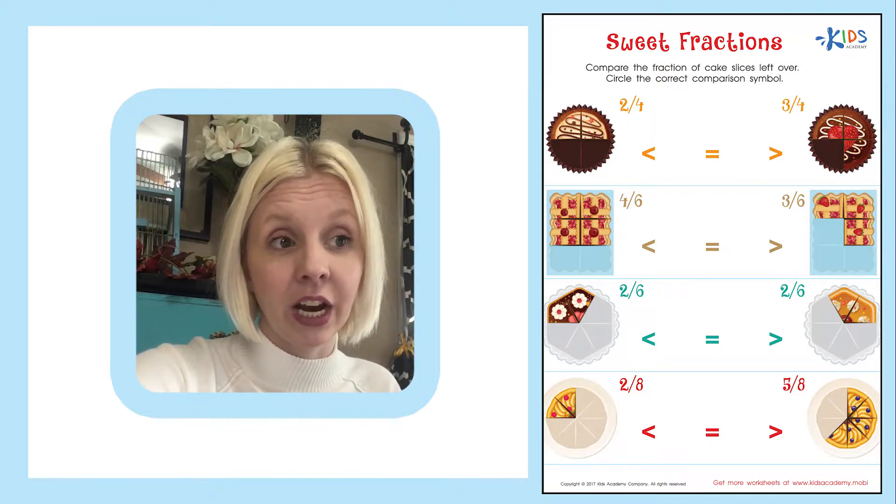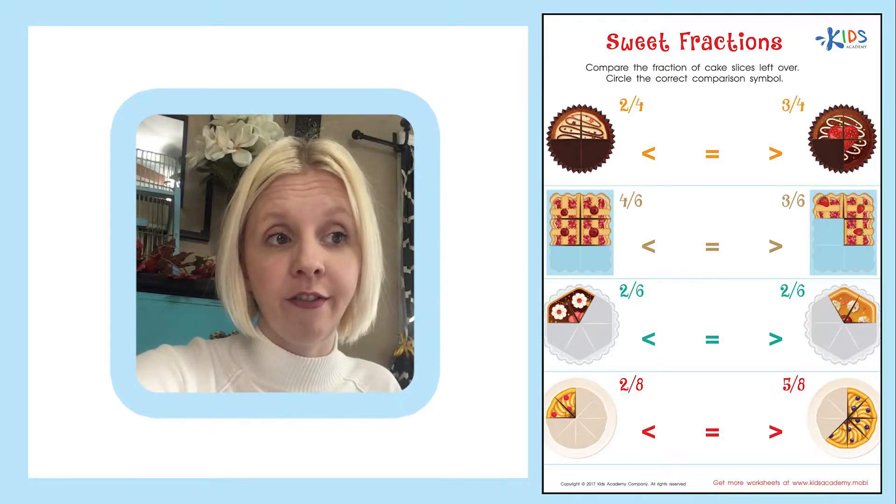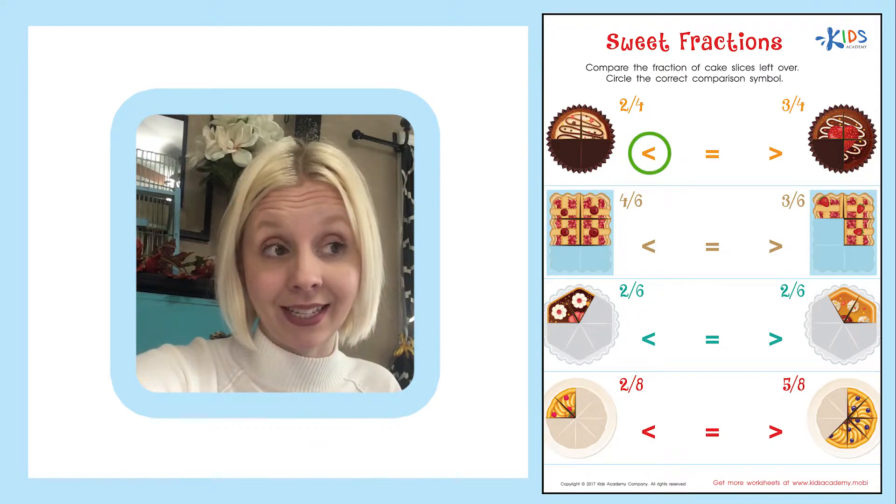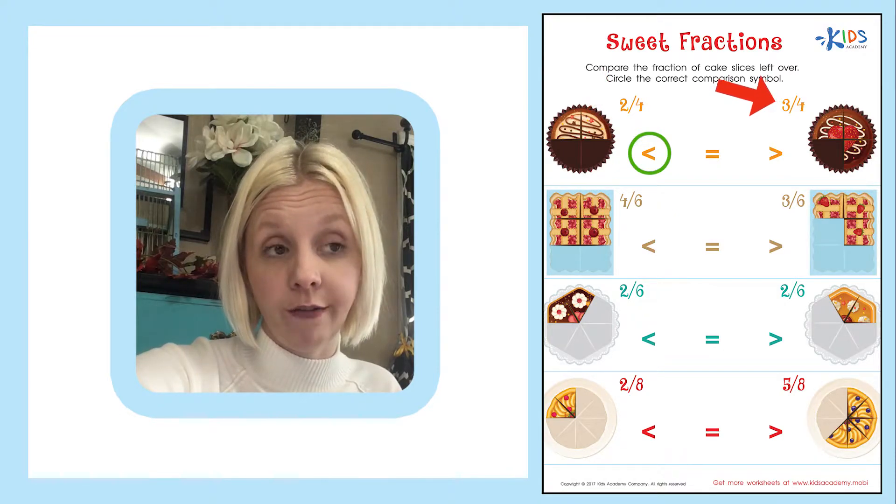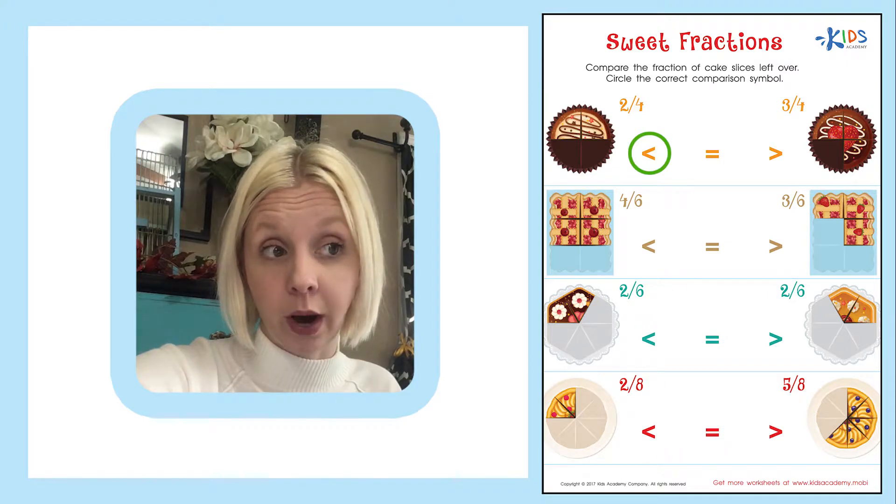This is the one that we want to eat. So we're going to make our sign face that one. I'm going to circle this one. And the way we would read this is two-fourths is less than three-fourths. We're reading it from left to right.